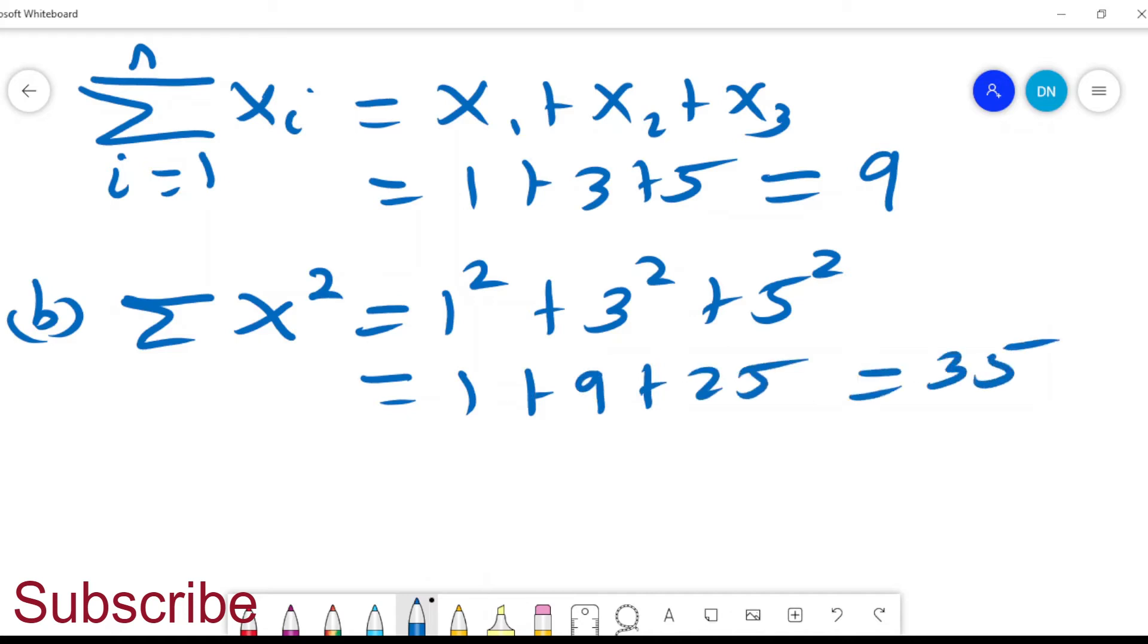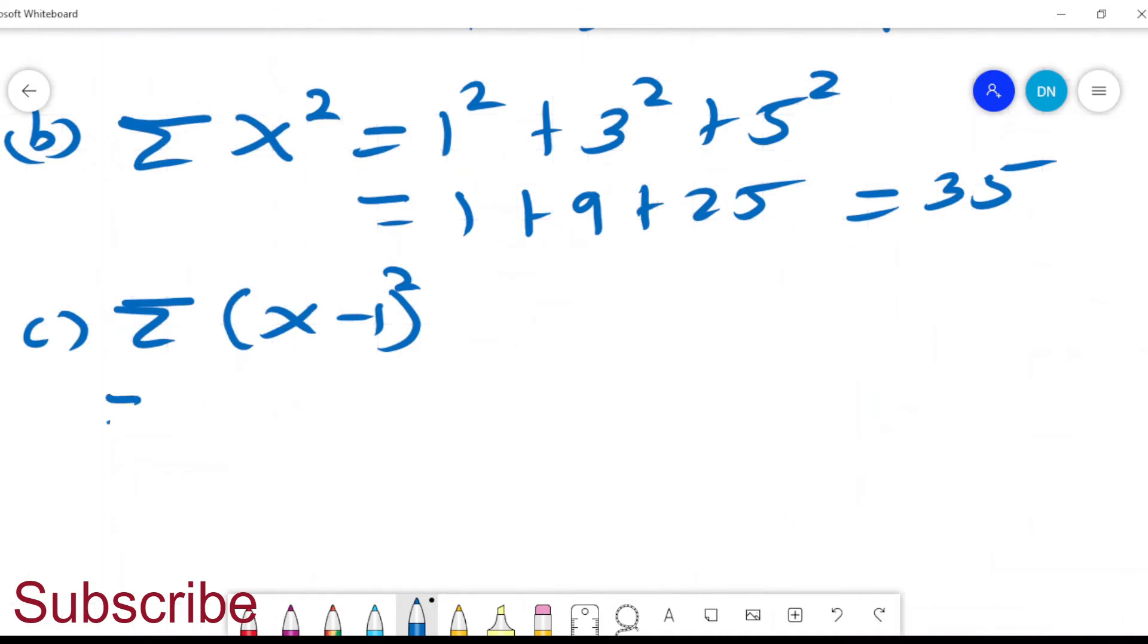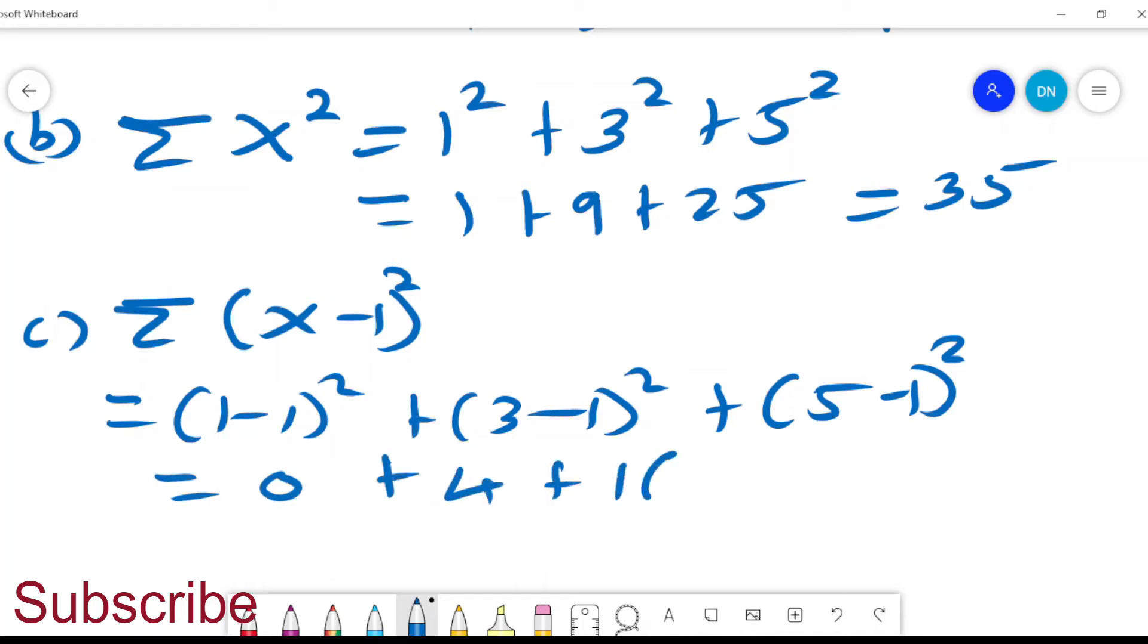We could also say let's get the summation of (x minus 1) squared. Do we square x and then subtract 1? No, for each value of x we reduce it by 1. So it will be (1 minus 1) squared plus (3 minus 1) squared plus (5 minus 1) squared. And this is 0 plus 2 squared is 4 plus 4 squared is 16, and the value will be 20.